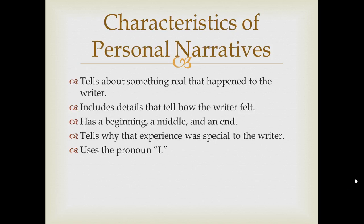Now let's take a look at the characteristics of a personal narrative. As you can see from reading 'Meeting Karam,' here are some of the ingredients you'll need to include. First, it tells about something real that happened to the writer — something important, not fictional. Include details that tell how you felt as a writer. Make sure it has a beginning, middle, and an end. It tells why that experience was special to the writer, and it uses the pronoun 'I' so you are the narrator within your story. Write down these five characteristics in your writing journal so you can refer back to them as you're writing your piece.